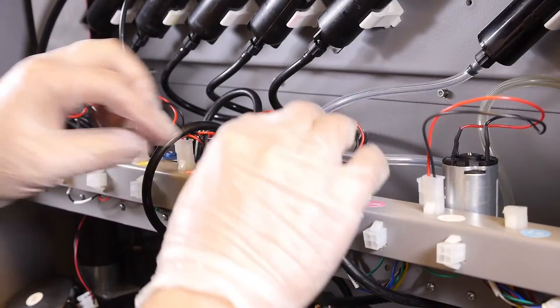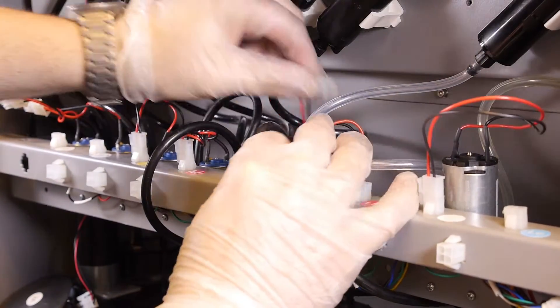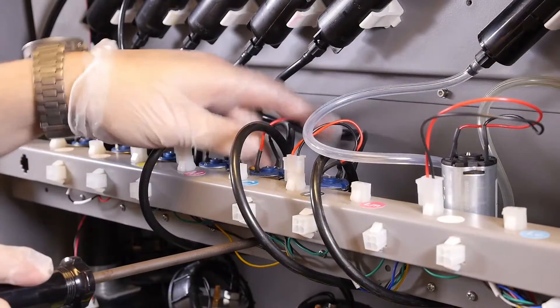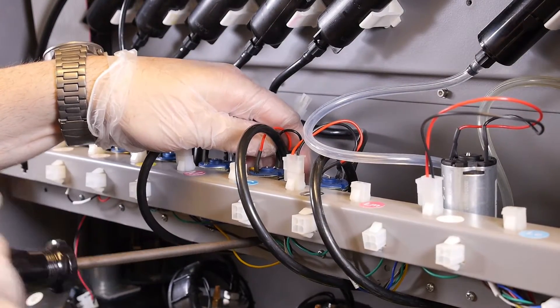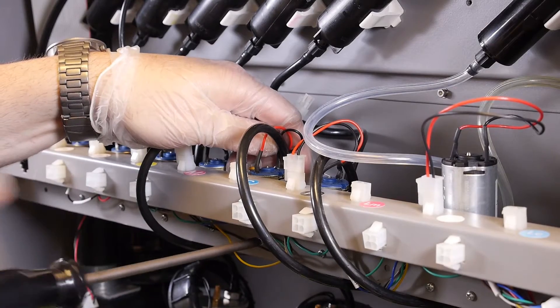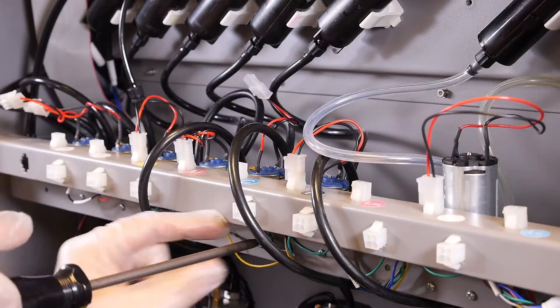First disconnect the ink pump plug from the receptacle. Next remove the ink pump from the mounting position. Use your Phillips head screwdriver and loosen the two mounting screws that secure the bracket.